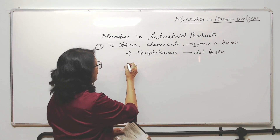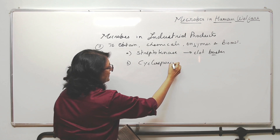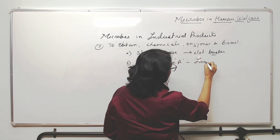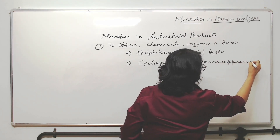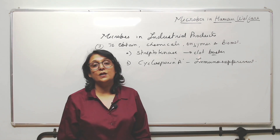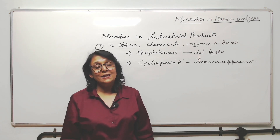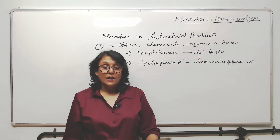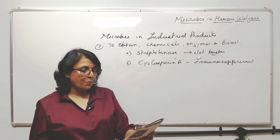Another one is Cyclosporin A, which is used as an immunosuppressant. After organ transplantation, the immunity of our body needs to be suppressed, and Cyclosporin A is that immunosuppressant which is given. The fungus used to produce this is Trichoderma polysporum.